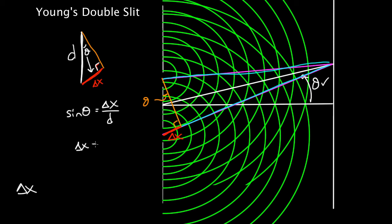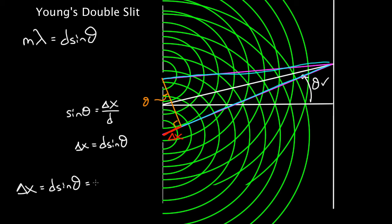So what's the path length difference? The path length difference for a double slit is just d times sine of theta. So this is what I wanted. Now I know delta x is d sine theta, and I can write, now I can write the double slit formula. Let me get rid of this. The double slit formula looks like this. It says that m times lambda equals d sine theta. And why? Well, remember delta x for constructive points was integers times wavelength.